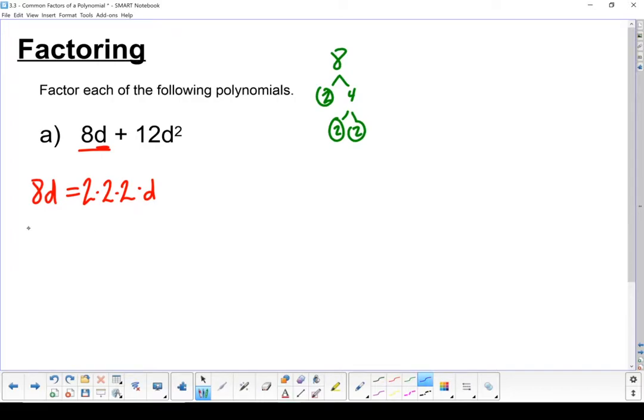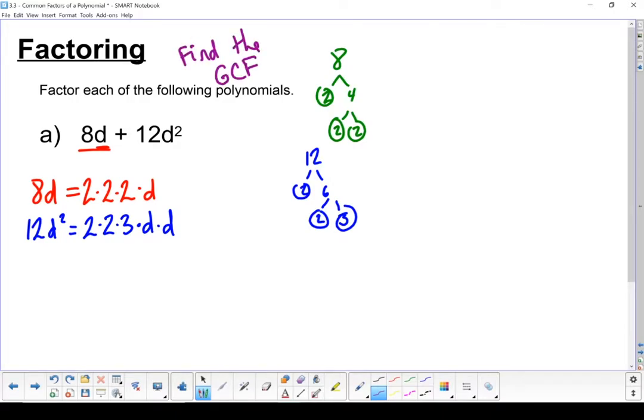If I look at 12d squared, I've got 2 times 2 times 3. Now when I look at my variables, I've got d squared means that it's 2 d's multiplied together. So I'm going to split those up. Now that I've got both of those terms factored out, I'm going to look for the greatest common factor, also known as the GCF. There's a pair of 2's common to both. There's a second pair of 2's common to both. I can take a pair of common d's. So my GCF equals 2 times 2 times d, or 4d.